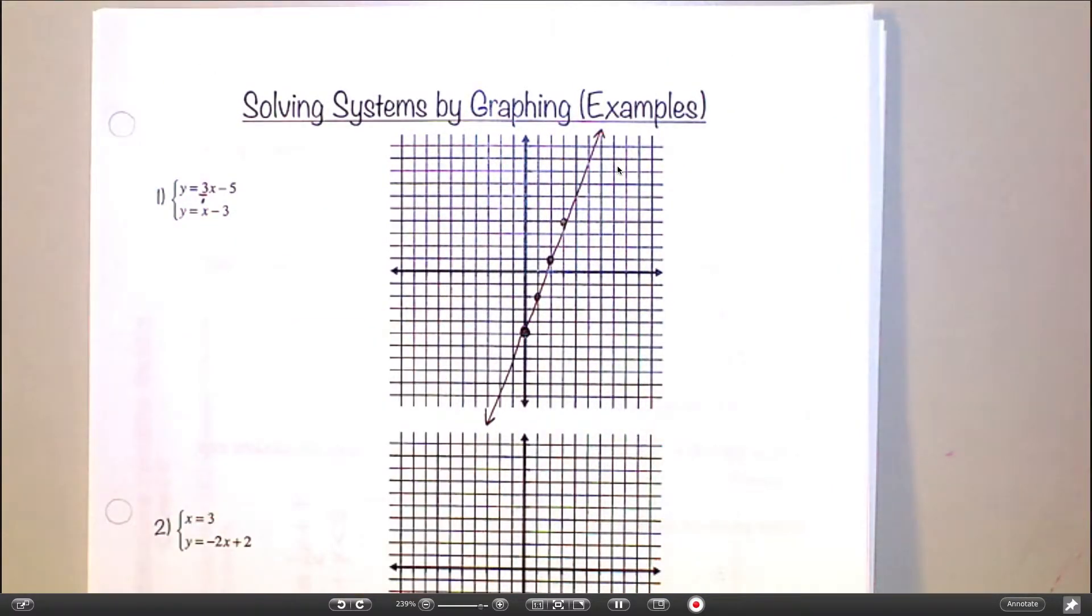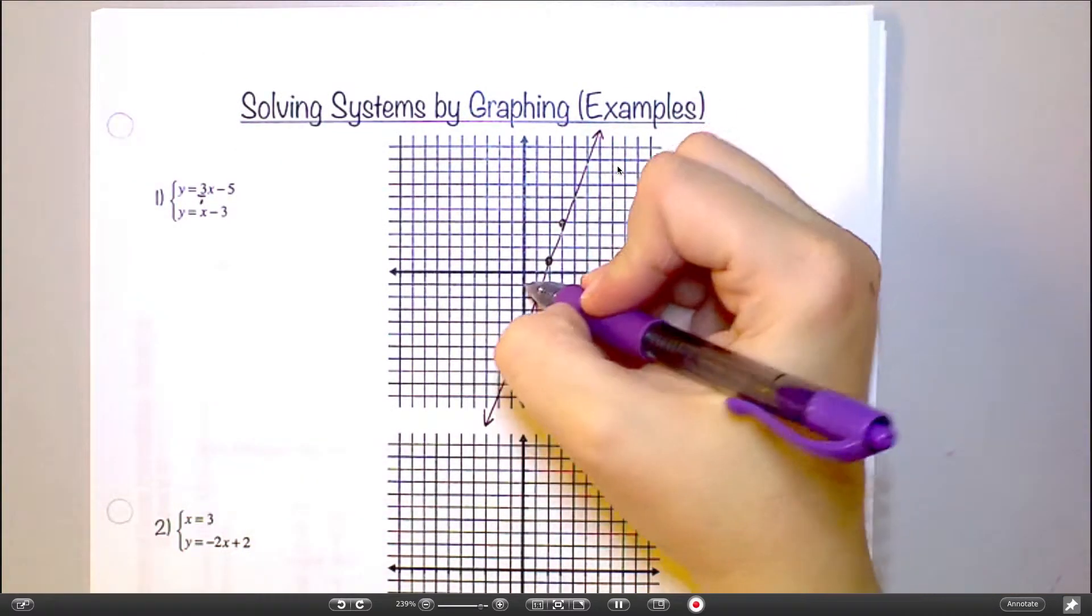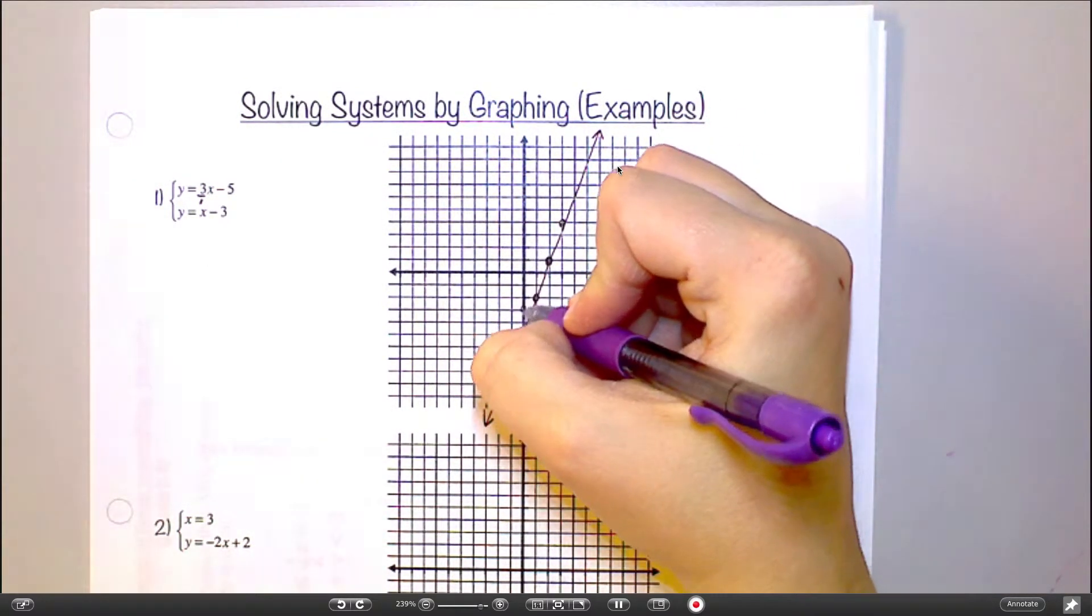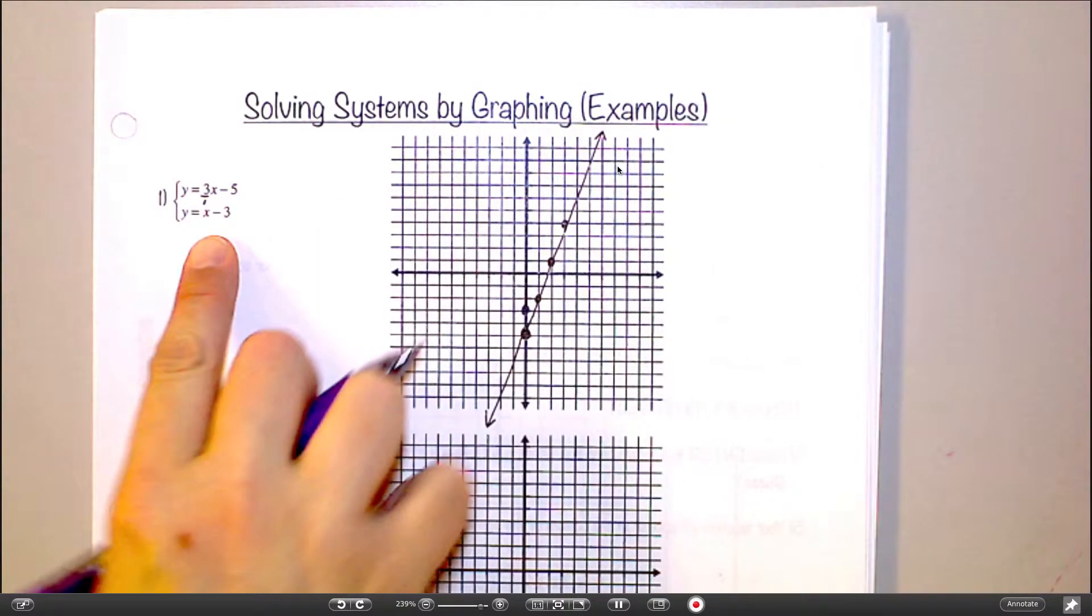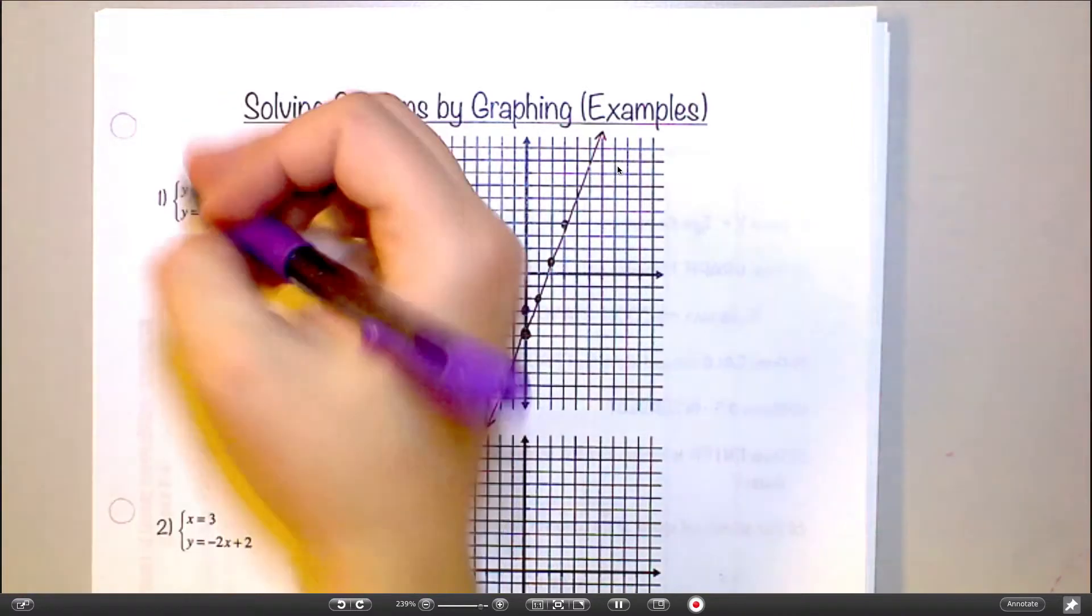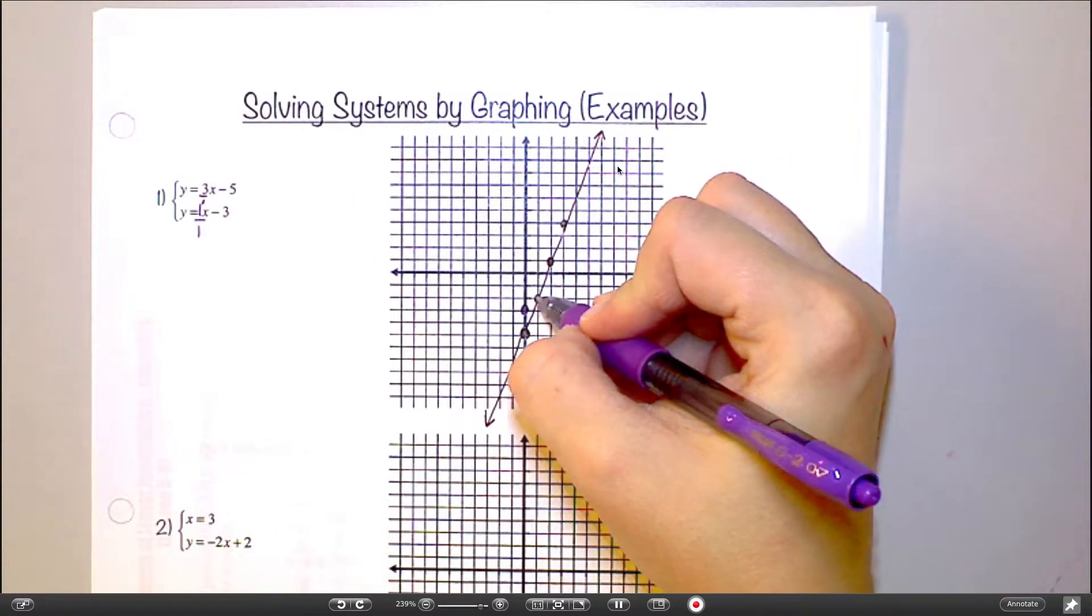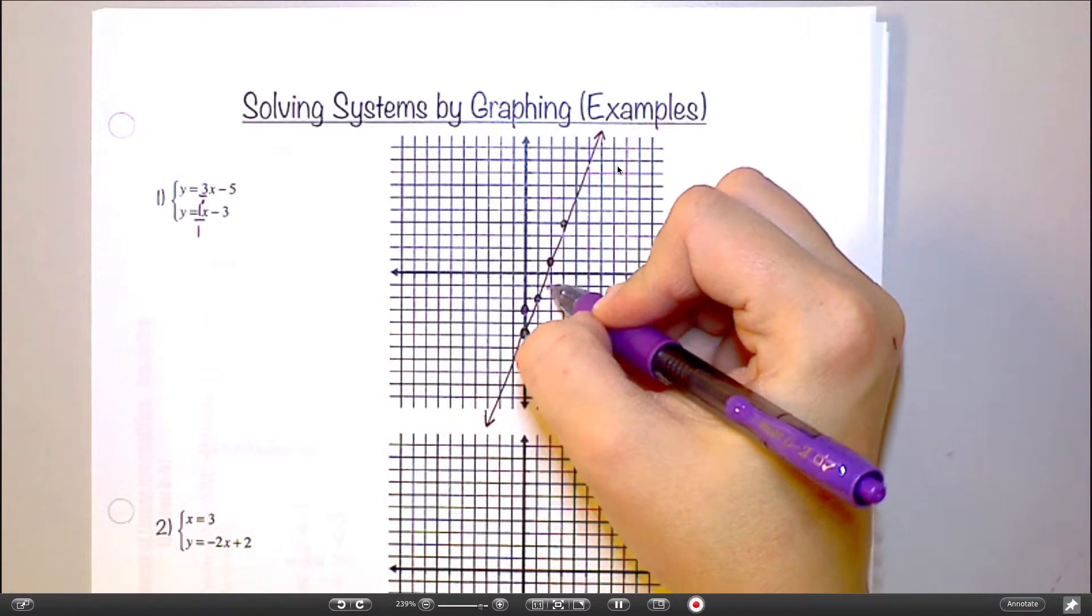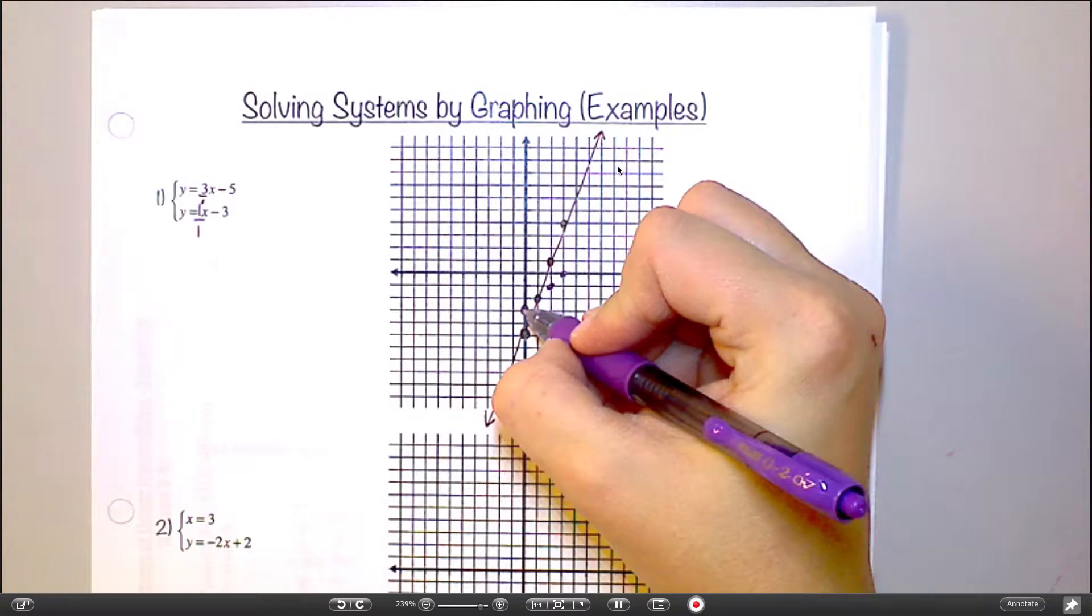And then my next equation is y equals x minus 3. So how do I graph that one? Where do I start? Negative 3 on the y-axis. Okay? And then my slope is what? On that one. 1. Yep. So it would be like 1 over 1. So I'm going to go up 1 over 1. Up 1 over 1. Up 1 over 1. And draw my line.